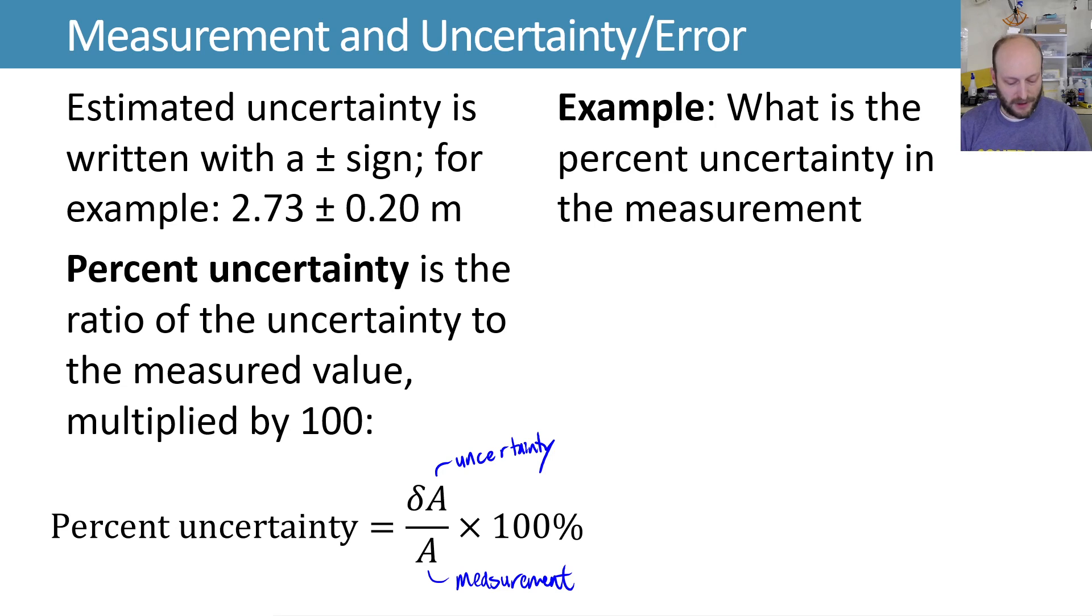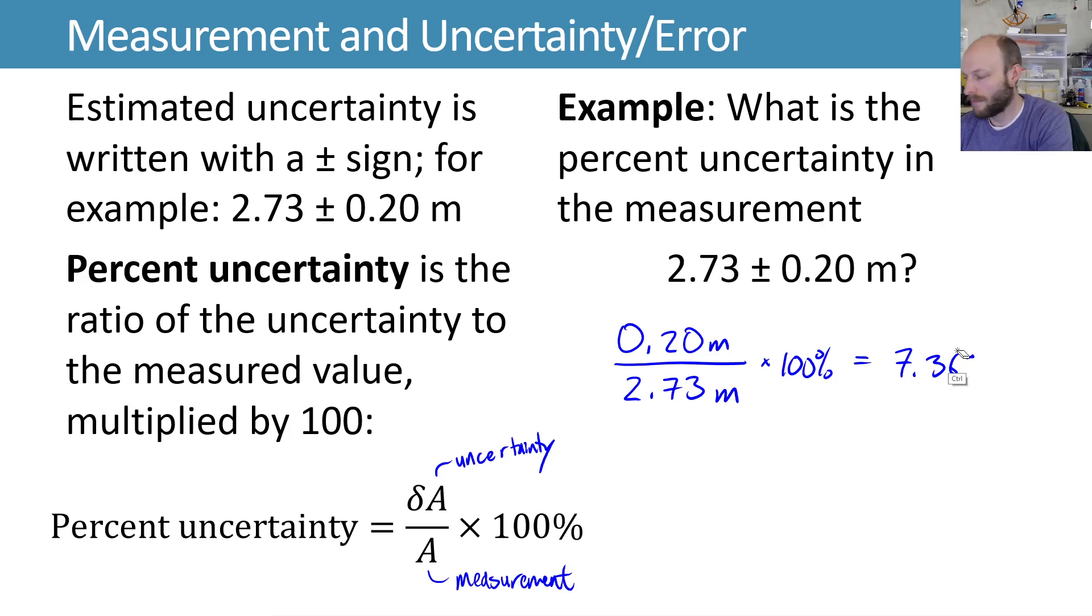So what's the uncertainty in this measurement? Well, here the uncertainty is the plus or minus 0.2. If I want that as a percent uncertainty, then I'll take and do 0.2 meters. So that's the uncertainty. We divide that by the measurement, 2.73 meters. And then you multiply by 100 percent. And in this case, you get 7.326 percent. And in general, since we're talking about uncertainty, this is not the actual measured quantity. It doesn't make sense to keep around a lot of digits here. We'd probably round that to either 7.3 or approximately 7 percent uncertainty on this measurement. So 2.73 plus or minus 0.20 meters is about 7 percent uncertainty in that measurement.